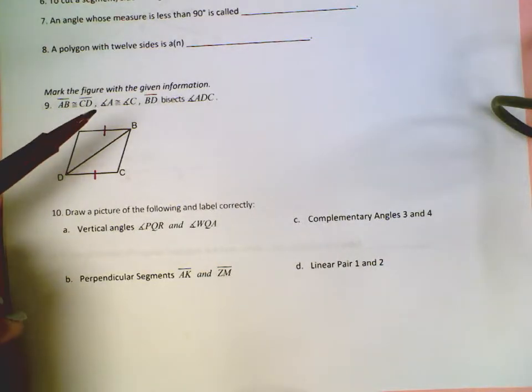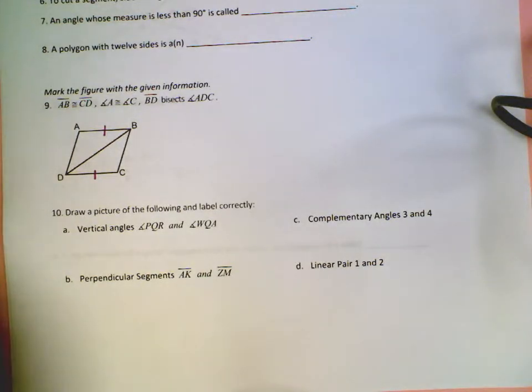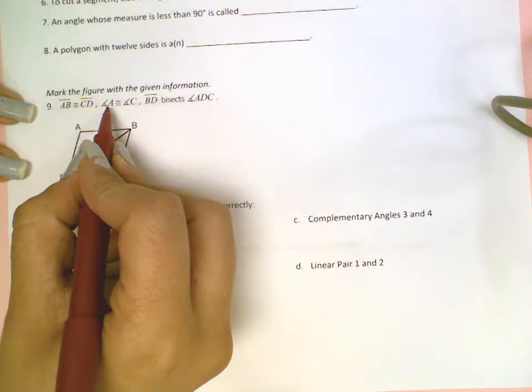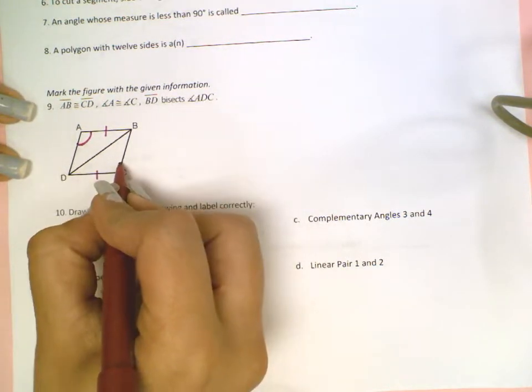Then it tells me that angle A is congruent or the same as angle C. So they need to have the same figure marking as well. So angle A, I'll put one arc. And angle C, I'll put one arc.